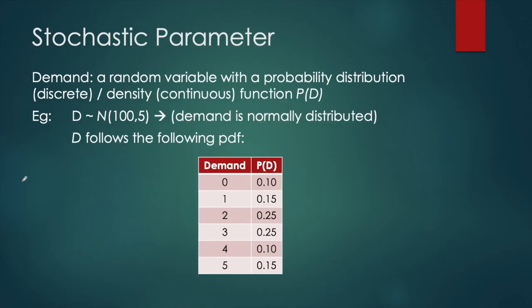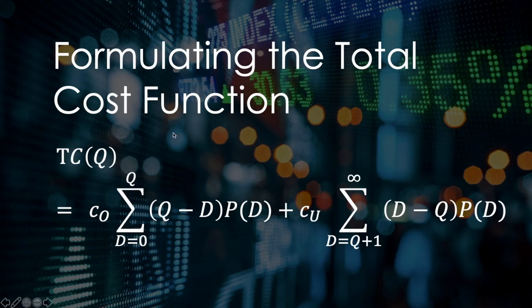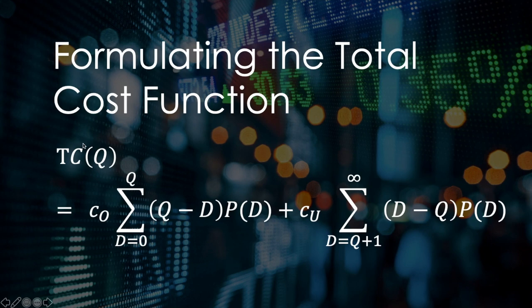To find the optimal order quantity Q*, we first need to understand how the total cost function behaves. This total cost function is in terms of the variable Q, since we are determining how many units to order. The first thing we need to do is understand how the total cost function behaves as Q changes.